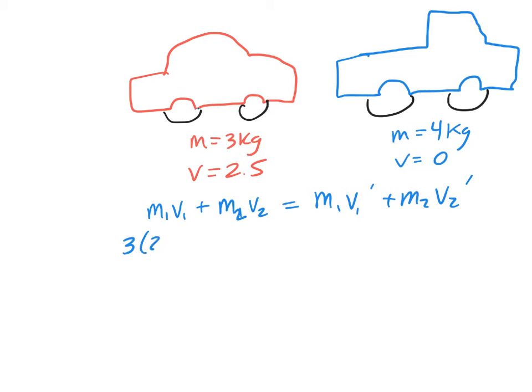All right, you can plug this in. 3 times 2.5 plus, so the truck was 0, equals afterward the mass of the car will be the same, 3. We don't know how fast it's going. Plus the mass of the truck is 4 and its velocity afterward was 1. So we can plug this in.